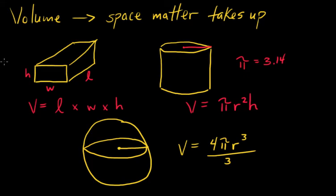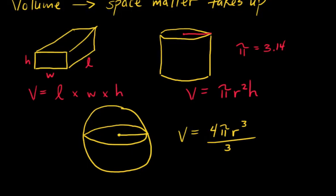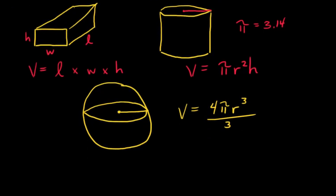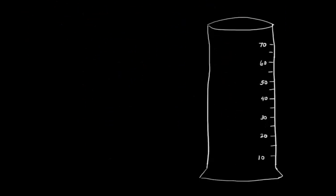Now, let's say you have an object that is not regular in shape. These are all what you would call regular objects. Let's say you have an irregular shaped object. How are you going to measure the volume without measuring the sides with a ruler? One method you can use is called the water displacement method.